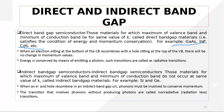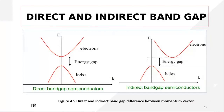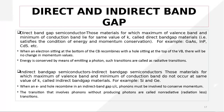Examples of direct band gap semiconductors include gallium arsenide, indium phosphide, and cadmium sulfide — they occur at the same value of k. When an electron present at the level of the conduction band de-excites from the conduction band to the valence band, it does so with the same momentum. In indirect band gap semiconductors, when an electron wants to come to the valence band there is a change in momentum.